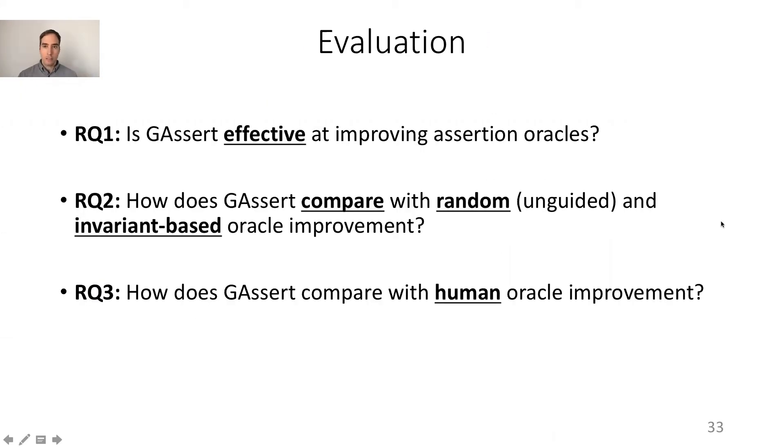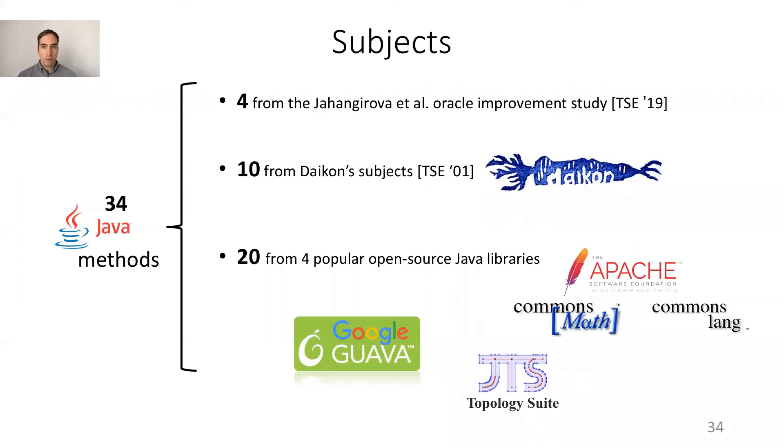We evaluated J-Assert with three research questions. Is J-Assert effective at improving? How does J-Assert compare with random and invariant-based oracle improvement? And how does J-Assert compare with human oracle improvement? We consider 34 Java methods for our experiments. Four from the recent oracle improvement study by Jahangirova and colleagues, ten from Daikon's subjects, which is the most popular invariant generator for Java. And then we took 23 from popular open source Java libraries: Apache Commons Math, Apache Commons Lang, Google Guava and JTS.